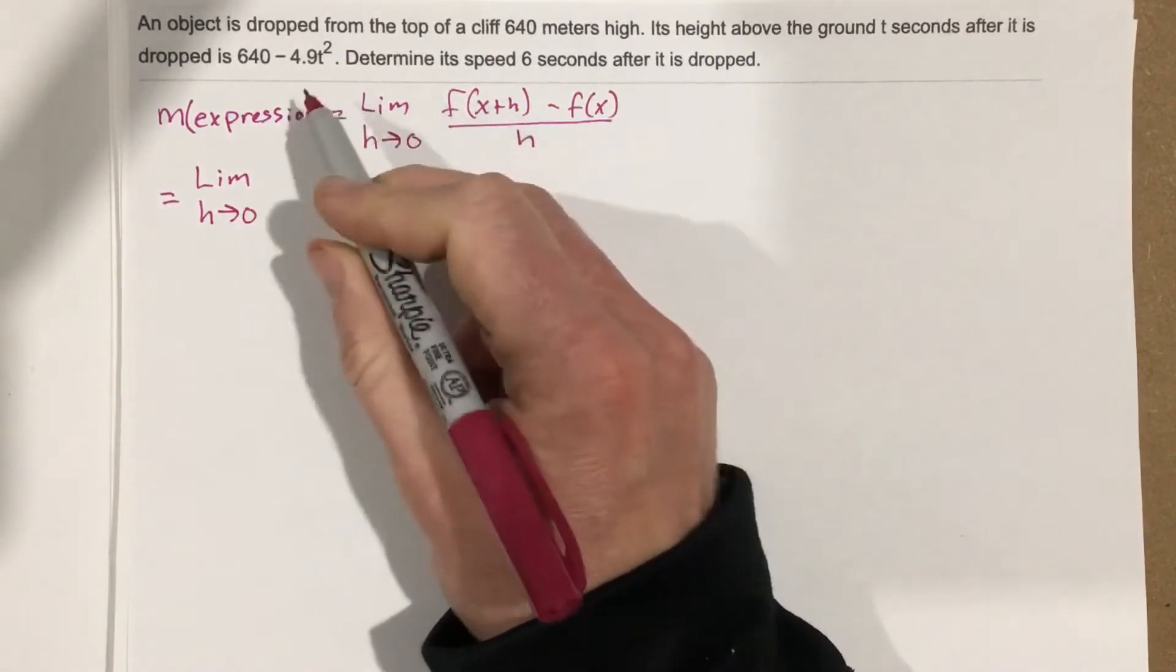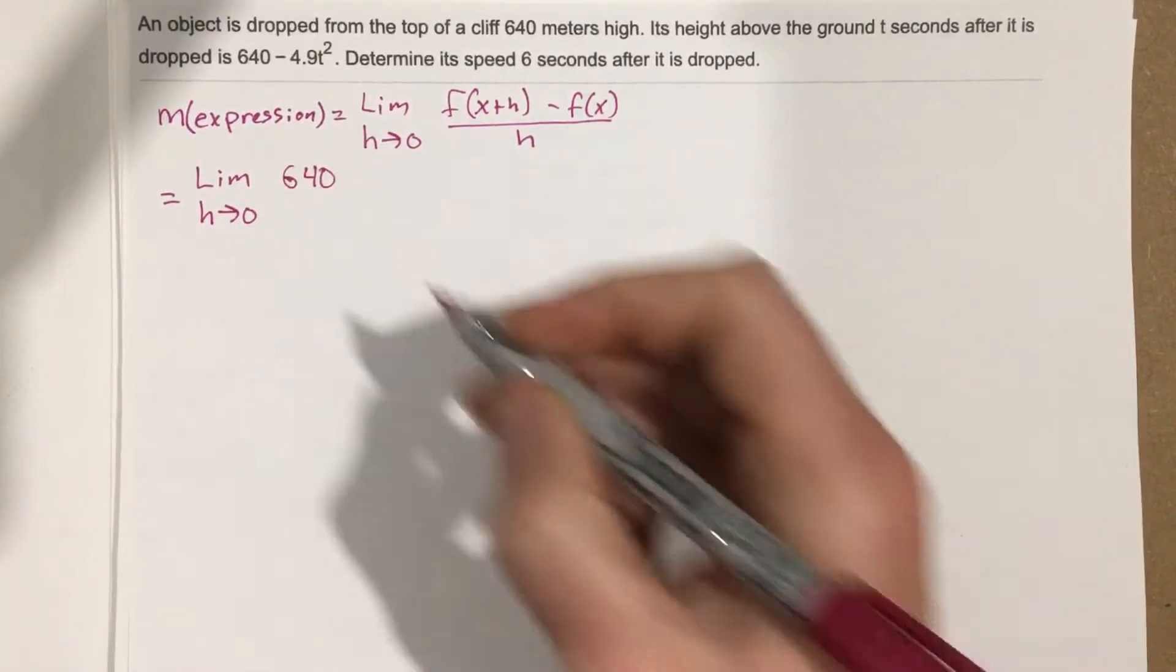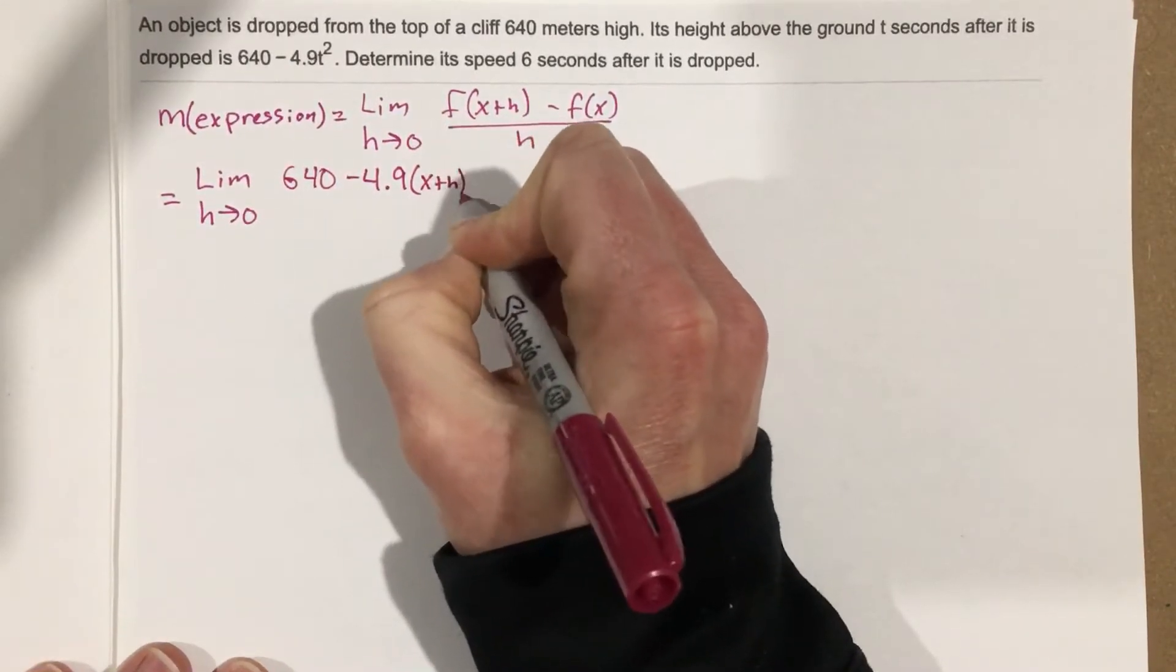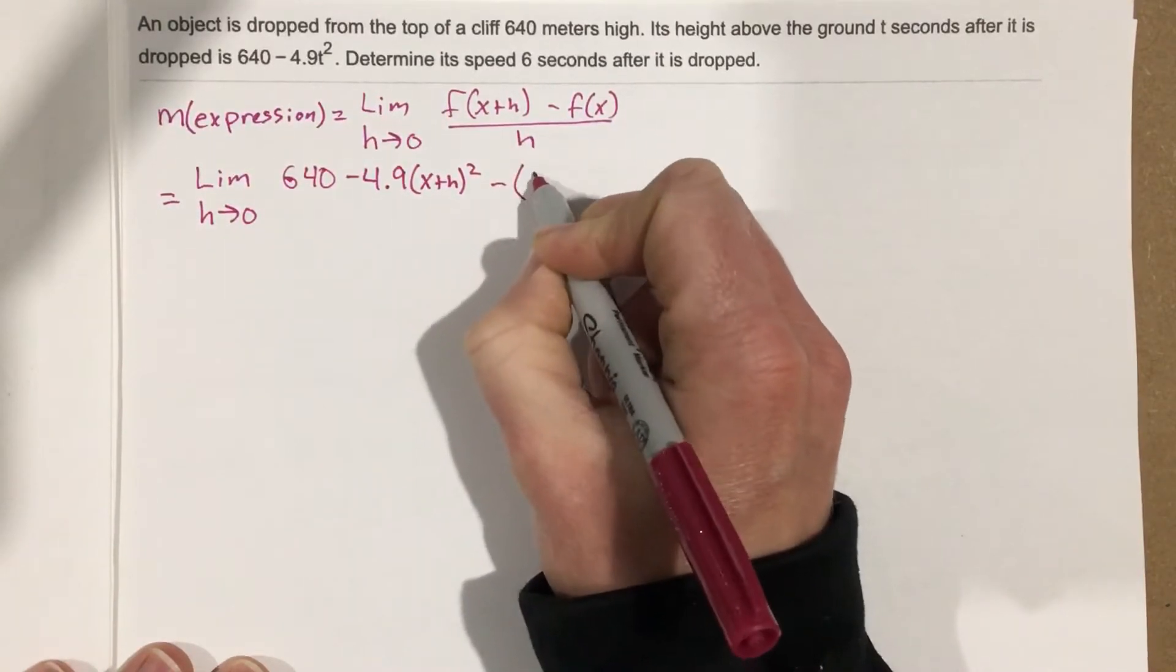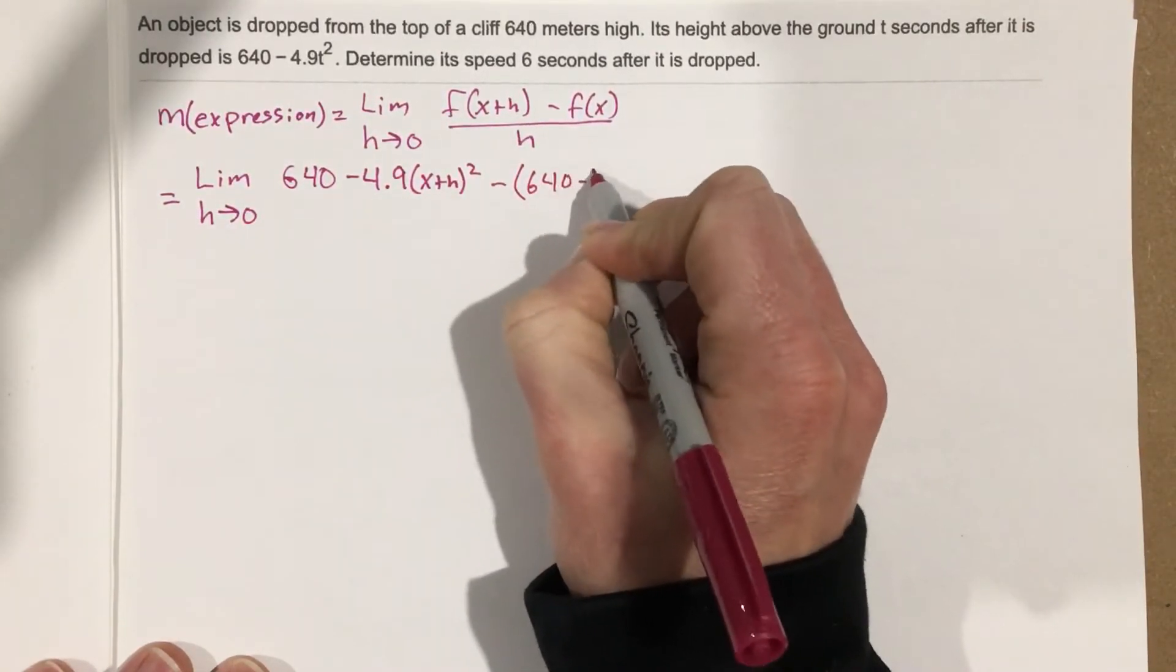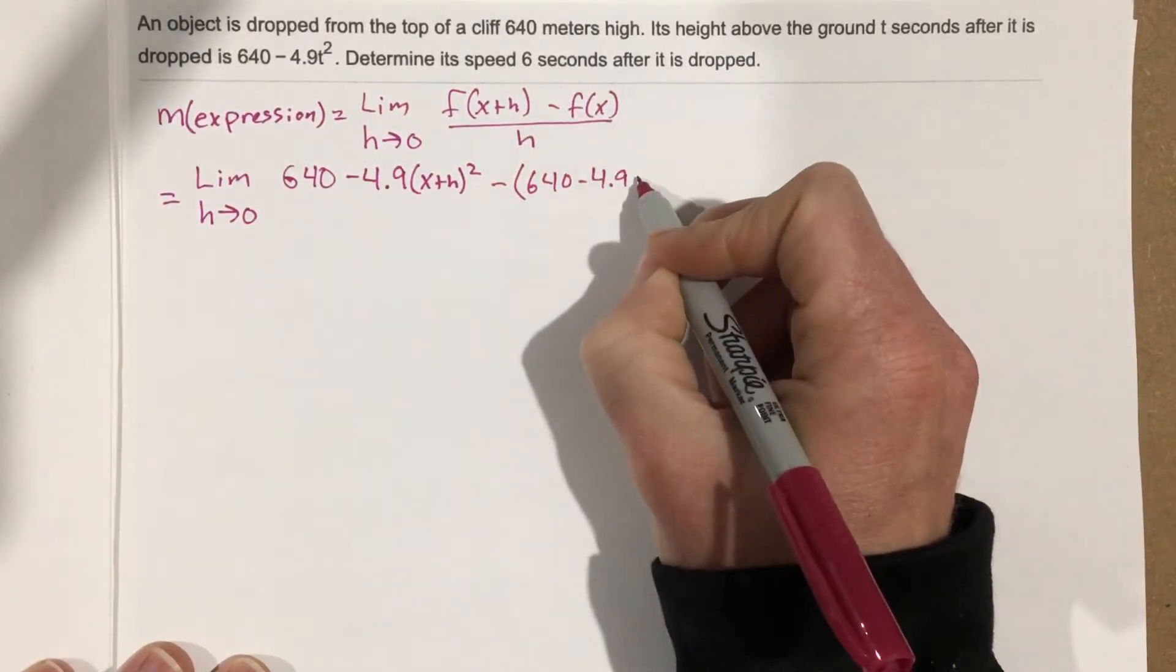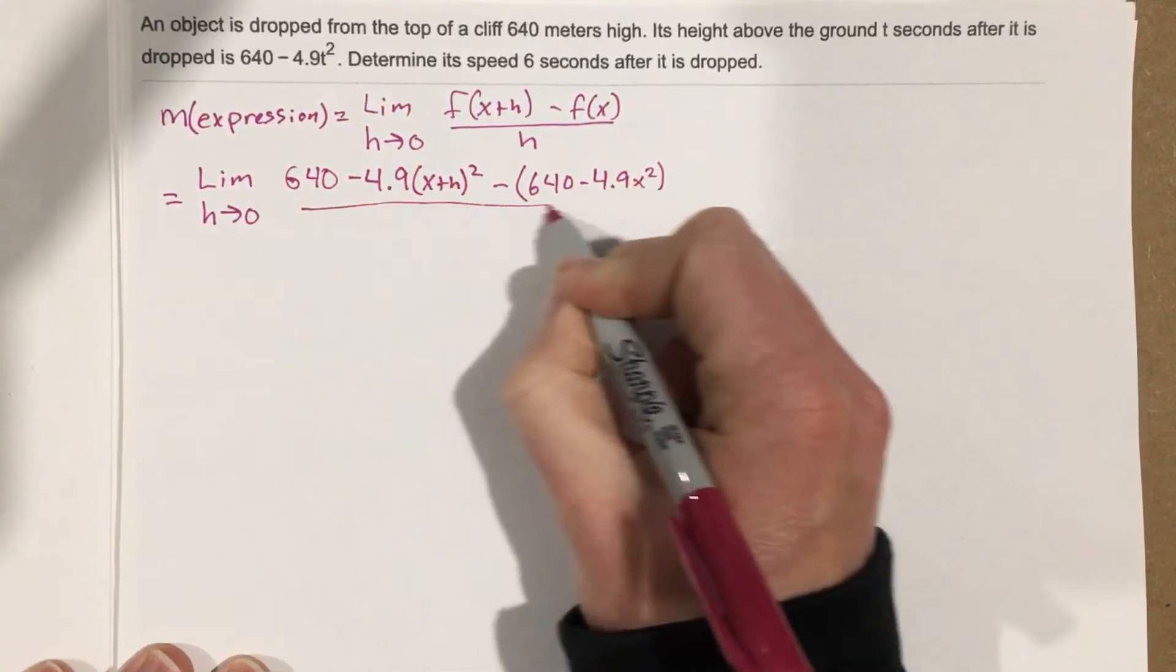We're going to plug in x plus h and we're going to get 640 minus 4.9 times x plus h squared, minus the function which is 640 minus 4.9x squared, all over h.